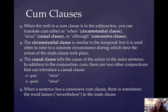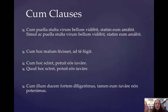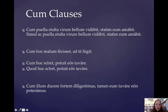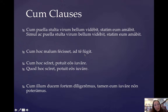Let's look at some examples to make the temporal, circumstantial, causal, and concessive clauses more concrete. The first example: cum puella stulta virum bellum videbit, statim eum amabit — 'When the foolish girl will see a pretty boy, she will immediately love him.' That is a foolish girl indeed! We have the indicative verb videbit, a future indicative, set up with the conjunction cum, so it translates 'when.' Another example of a temporal clause using simulac: 'As soon as the foolish girl will see a pretty man, she will immediately love him.'